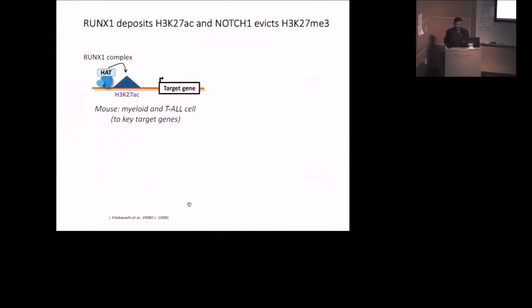So RUNX1 is known to physically interact with histone acetyltransferase protein that deposits H3K27 acetylation mark and activates target genes. This has been shown in mouse model in myeloid tissues and T-ALL cells. Here, we want to study the role of RUNX1 to assess its impact in acetylation in human T-ALL cell lines. We took the human T-ALL cell line Jurkat. We knocked down RUNX1 gene by shRNA, and in the RUNX1 control sample, we performed H3K27 acetylation ChIP-seq.